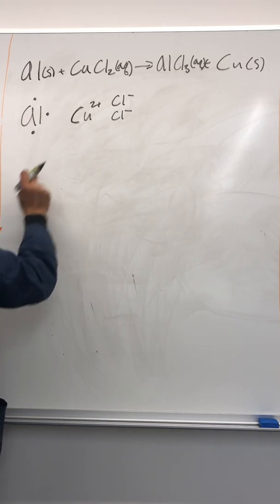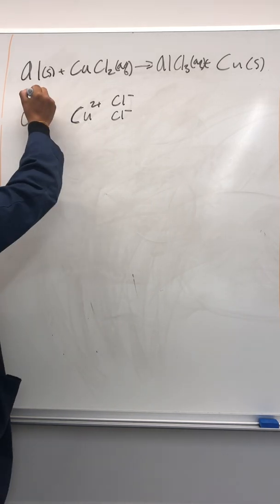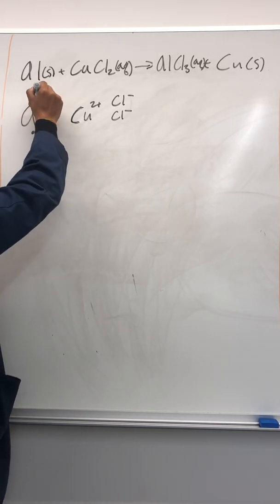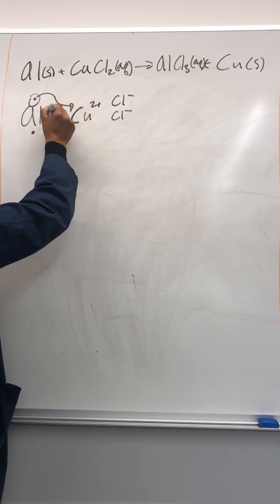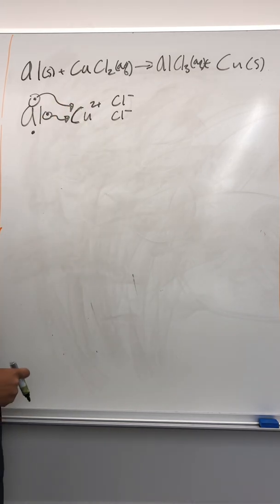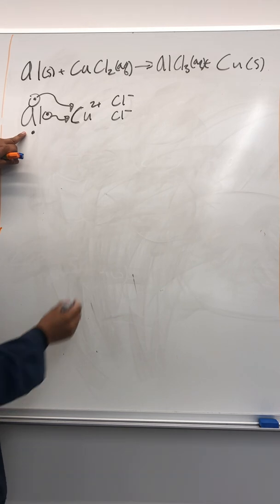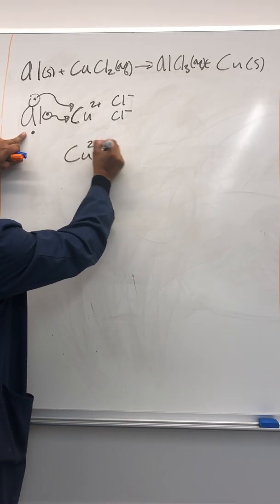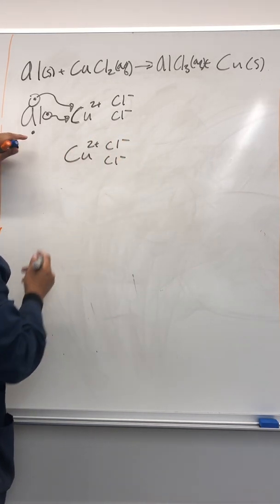So, aluminum has three electrons. Copper has two plus. It wants to get rid of all three of them. So it gives two to this copper here. Okay, this one still has another electron to give away. So another copper chloride is called upon.